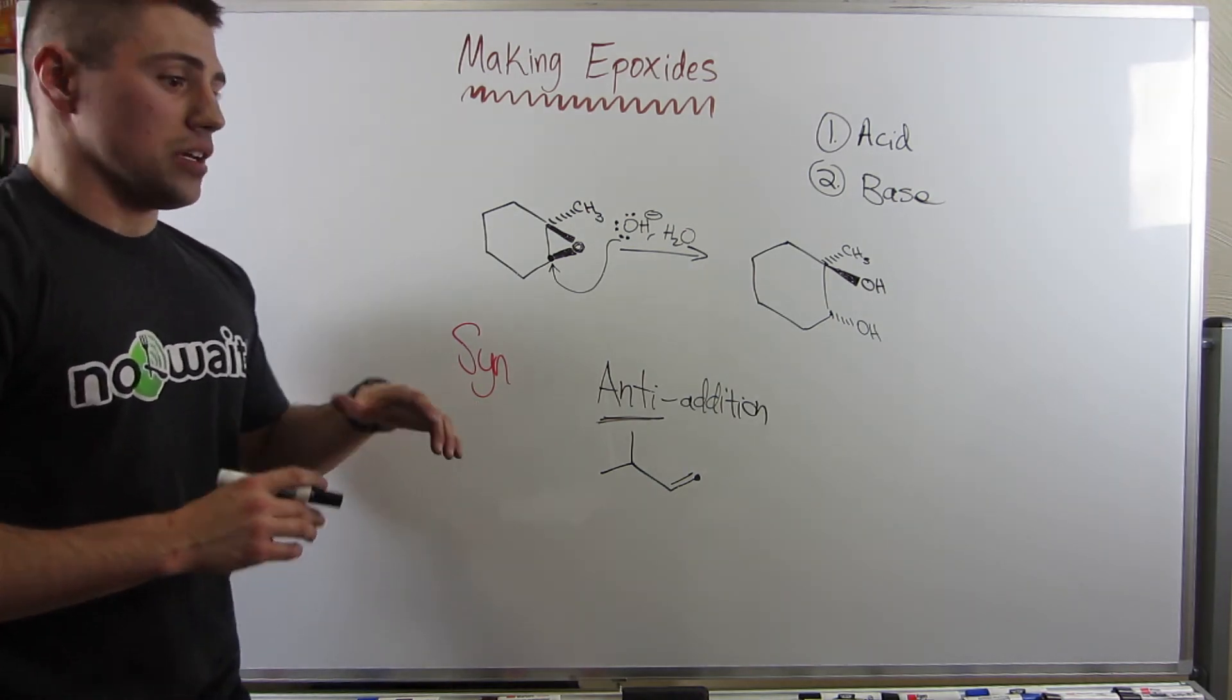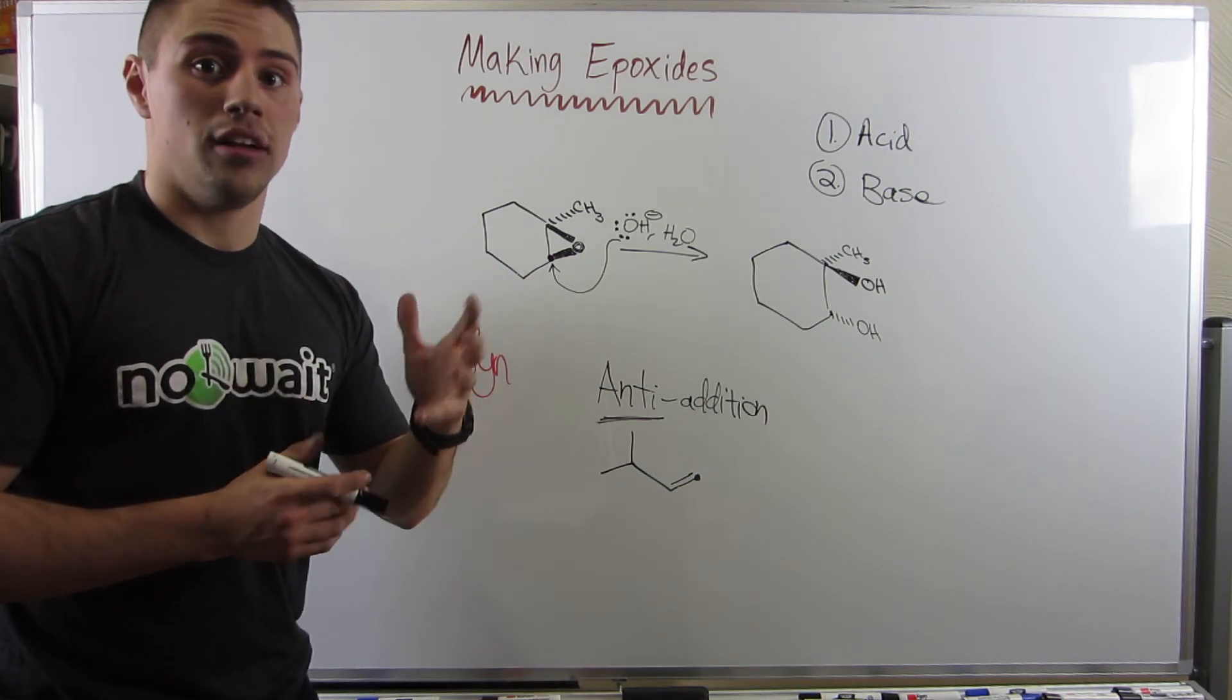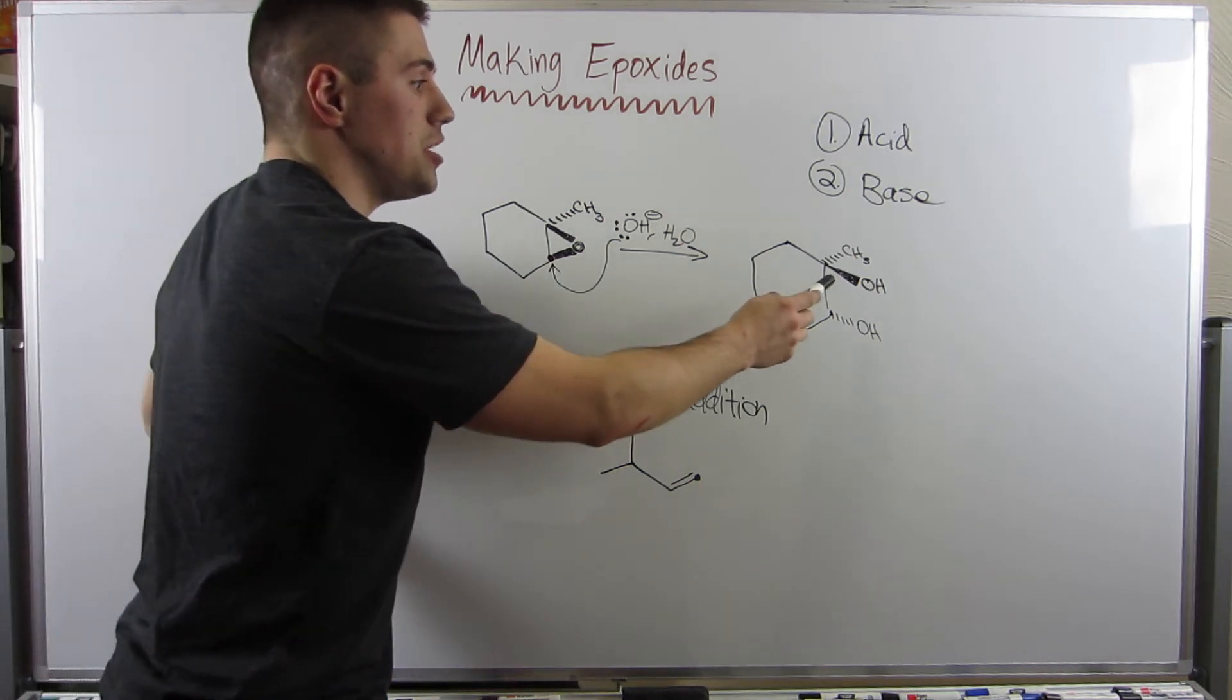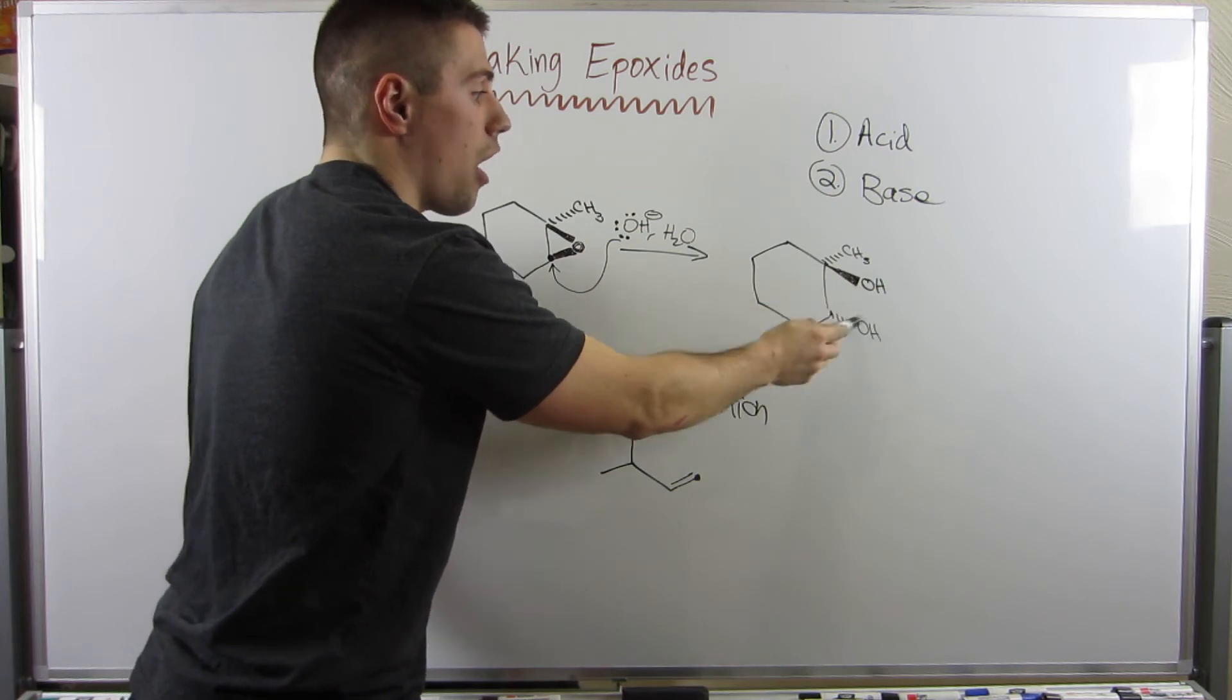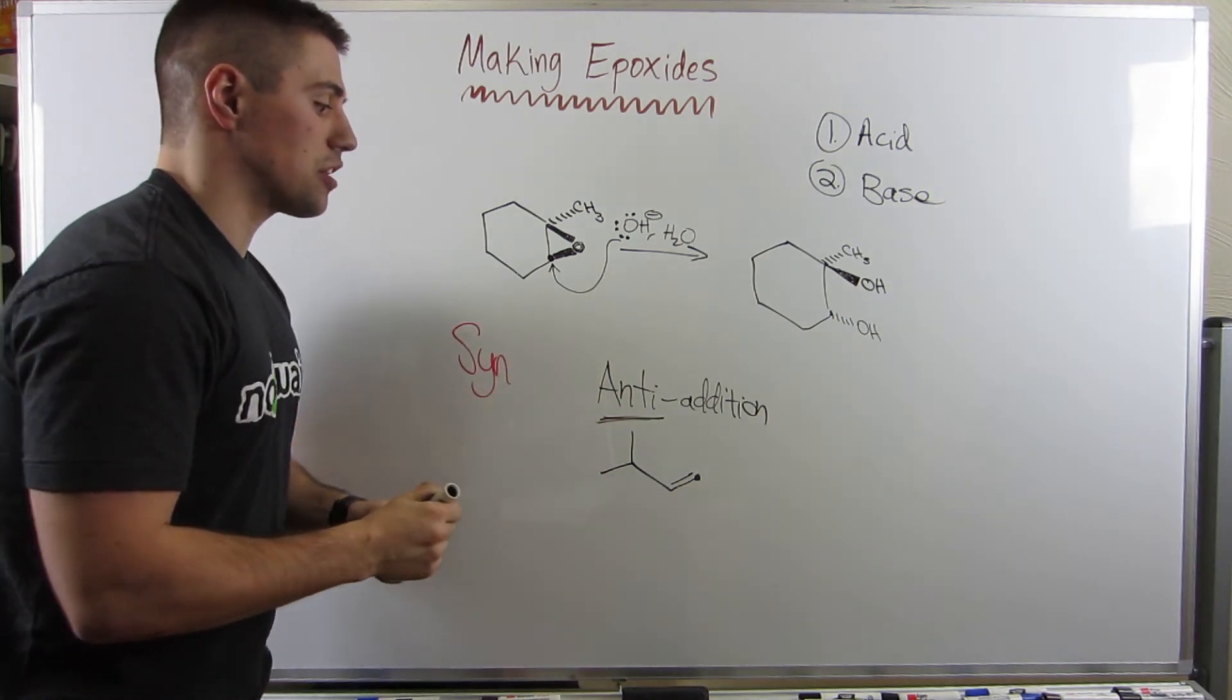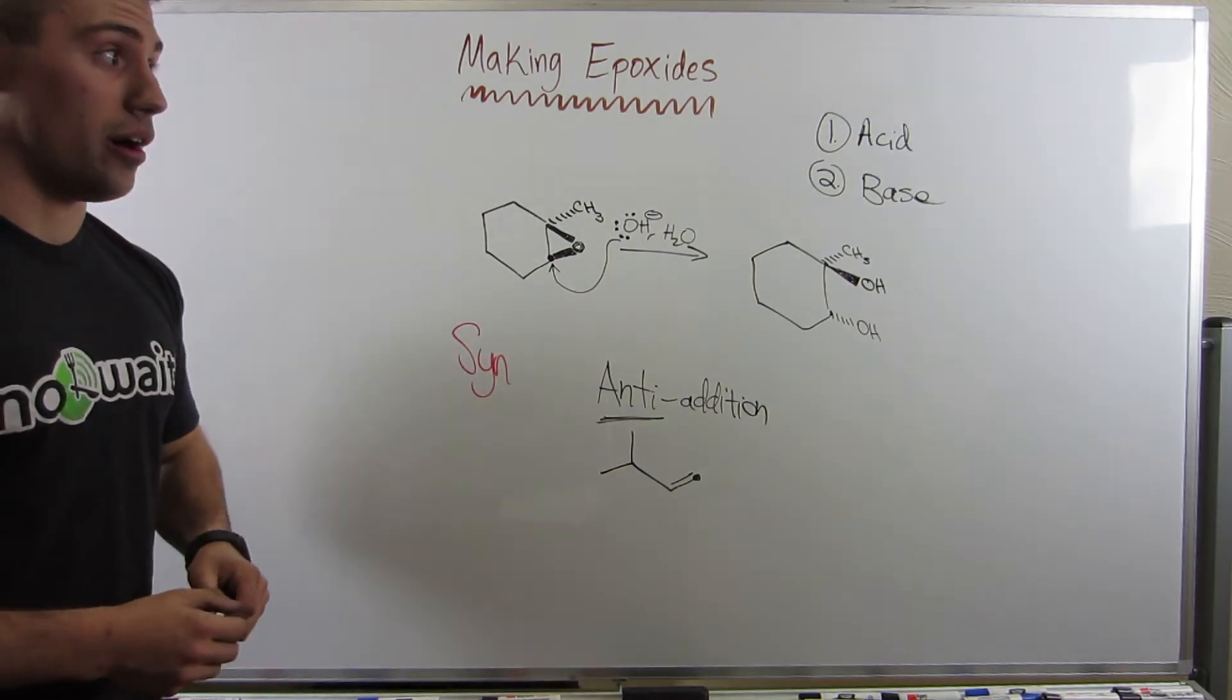Syn-addition, think of hydrogenation. You're adding two groups to the same side. They have the same stereochemistry, two wedges, two dashes, either one. Anti-addition, this can mean you add or produce two groups that are on the opposite sides. They have opposite stereochemistry as far as wedges and dashes. But anti-addition can also mean adding something to a least substituted position in a double bond.